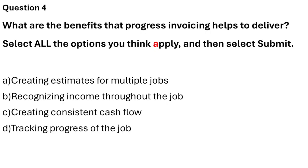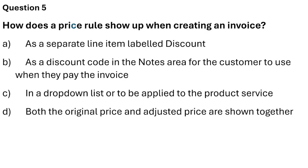Question 5: How does a price rule show up when creating an invoice? The options are: as a separate line item, labeled as a discount, as a discount code in the description area, in a drop-down list to be applied to the product/services, or both the regional price and initial price are shown together. The correct answer is Option C: in a drop-down list to be applied to the product/services.